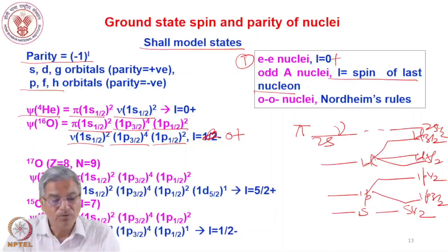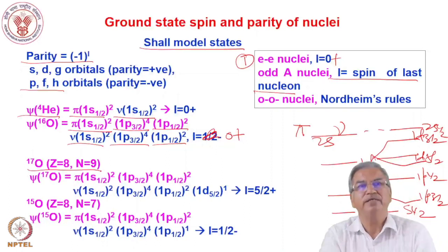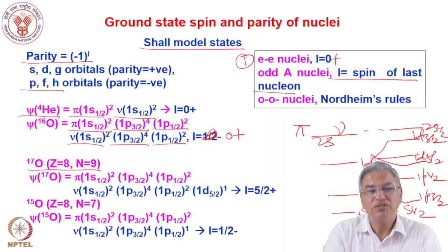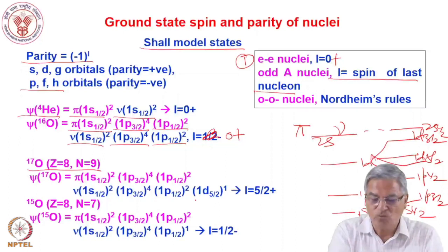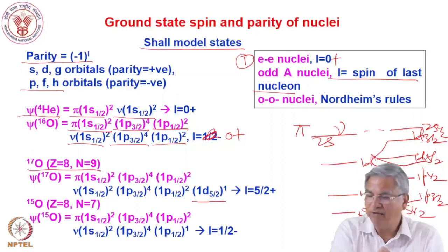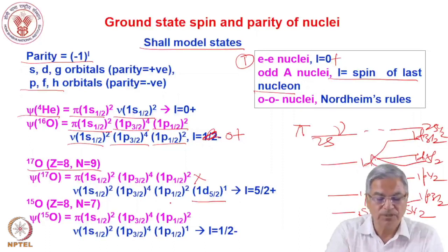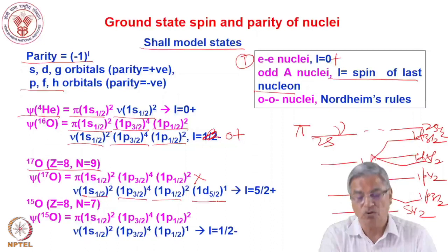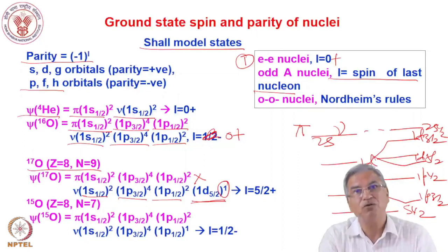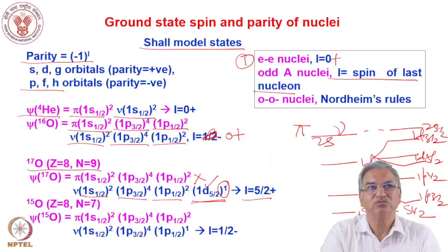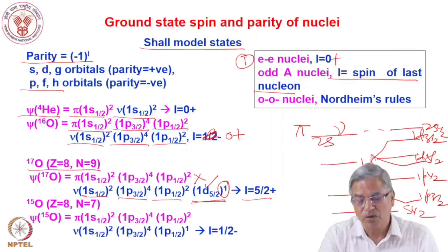For Oxygen-17 (8 protons, 9 neutrons), we focus on where the 9th neutron goes. Filling the neutron levels: 1s½ holds 2, 1p3/2 holds 4, 1p½ holds 2 — that accounts for 8 neutrons. The 9th neutron goes into 1d5/2. The J value of the last occupied orbital gives the nuclear spin, so I = 5/2+, since d has even parity.